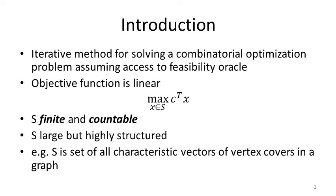What is the ellipsoid method? It's an iterative method for solving a combinatorial optimization problem. A combinatorial optimization problem is an optimization problem where the set of feasible solutions is finite and countable.